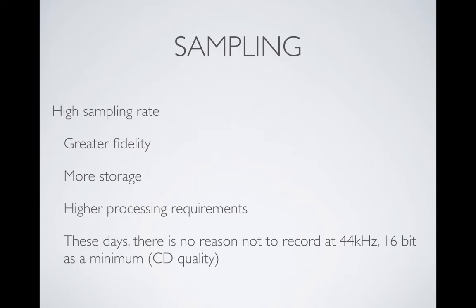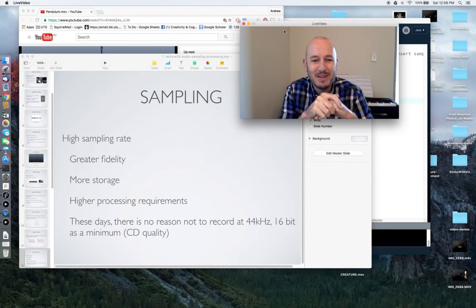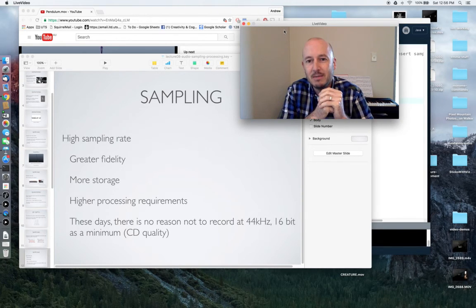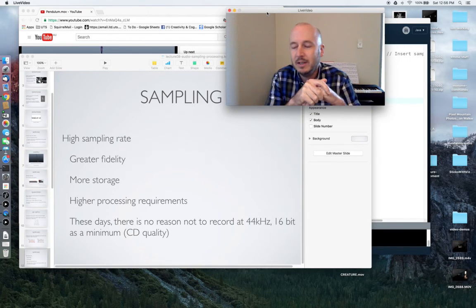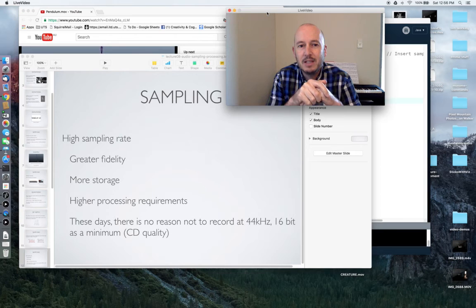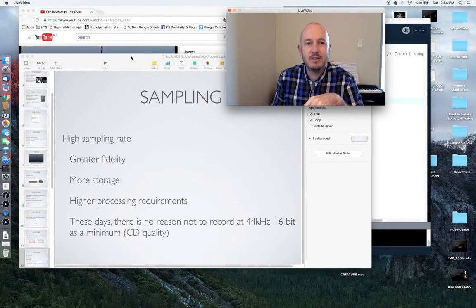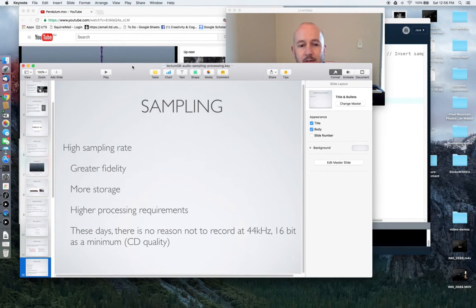To put it in a nutshell, these days practically speaking there is no reason not to record at least 44 kilohertz — that is 44,000 times a second — using 16-bit samples. That is CD quality. The CD standard for compact disc recording was 44,000 samples a second at 16-bit precision. In your assignments and anything you do with digital audio, there's no reason these days to use anything less than that. Computers' storage capacity and processing capacity are now at a point where it's unnecessary to scrimp and save on data — when it comes to audio, it's not really an issue anymore.